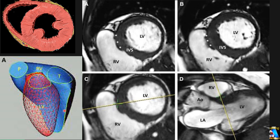From the mitral valve to the tip of the right ventricle, in short axis on CT scan or MRI, you can see cross sections of the left ventricle and right ventricle. At the superior part, this part of the RV is narrower than the inferior part of the RV, as you can see in all three images.